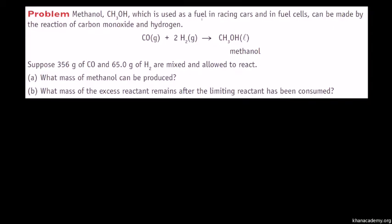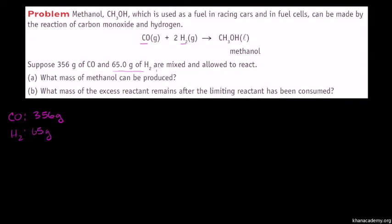We're told methanol, which is used as a fuel in racing cars and fuel cells, can be made by the reaction of carbon monoxide and hydrogen. So this is the methanol right there. They're giving us 356 grams of carbon monoxide and 65 grams of molecular hydrogen. They're mixed and allowed to react. What mass of methanol can be produced?